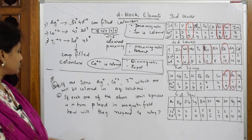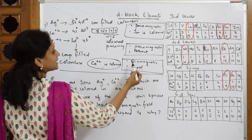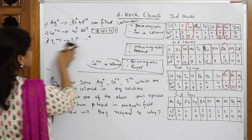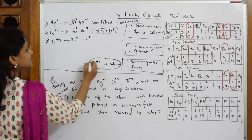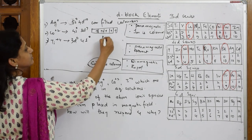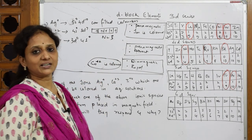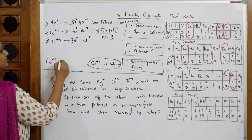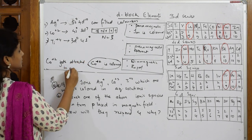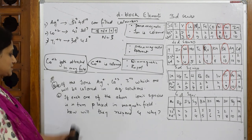Now for the magnetic field question: Ag+ is diamagnetic — completely filled 4d10 — it will be repelled. Ti4+ is diamagnetic — completely empty — it will also be repelled. Co2+ is paramagnetic with n = 3 unpaired electrons, so when placed in the magnetic field it will get attracted. The answer is Co2+ gets attracted to the magnetic field because of its paramagnetic nature.